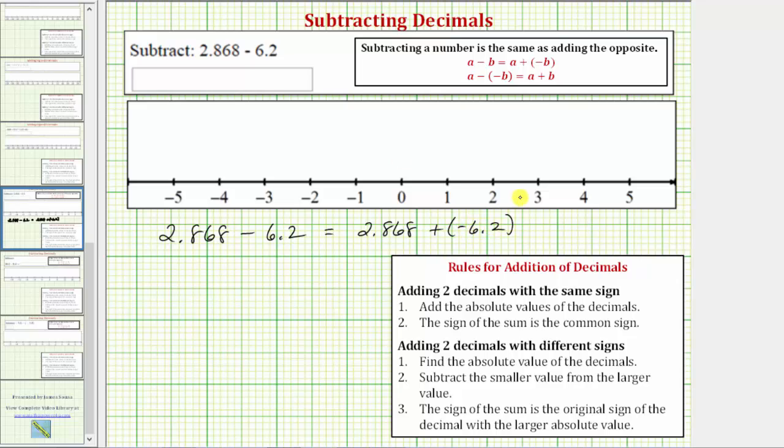Now that we have the difference as a sum, we'll find this sum using the formal rules for adding decimals. And because we have a positive plus a negative, we'll be using the rules here for adding two decimals with different signs.